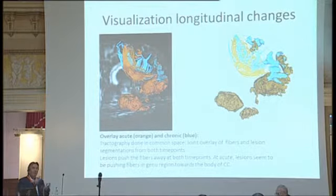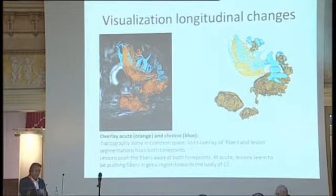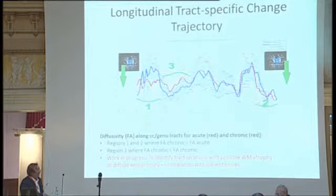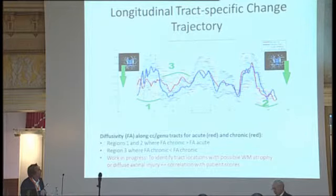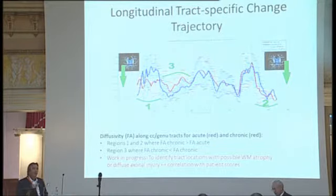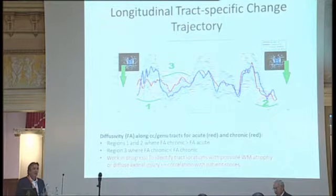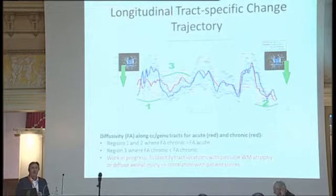We overlay the longitudinal changes of lesions — acute versus chronic lesions — with fiber tracts for a joint visualization of time changes in the individual brain. And for tract-specific analysis, this shows statistics of FA where acute is red and chronic is blue along the tract, localizing parts of the tract that show typical differences. Rather than only the mean FA along a tract, you see FA changes considerably along tracts, giving data usable for statistical analysis.